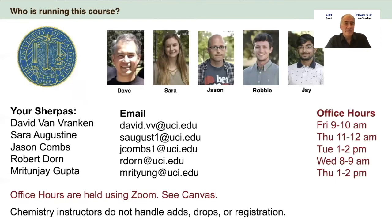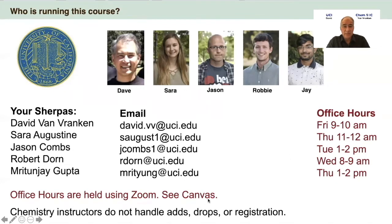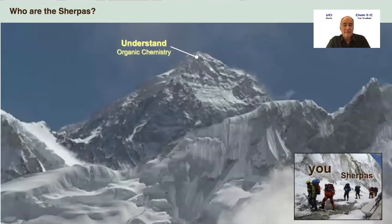Let's talk about who's running this course. This is a course run by the University of California at Irvine. They hire me and my team to teach you organic chemistry and then evaluate you and assign grades at the end of the quarter. This is our team this quarter - we're here to help you. Sarah Augustine, Jason Combs, Robbie Dorn, Jay Gupta - we are your team and we're here to help you. We are going to have office hours this quarter using Zoom. You can find our Zoom addresses on Canvas and the office hour times that will be available.